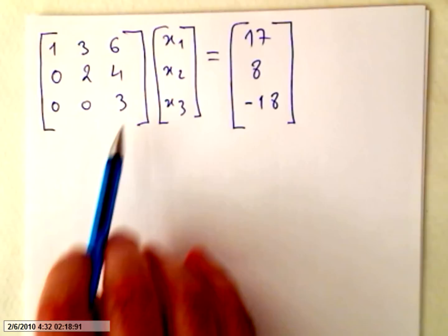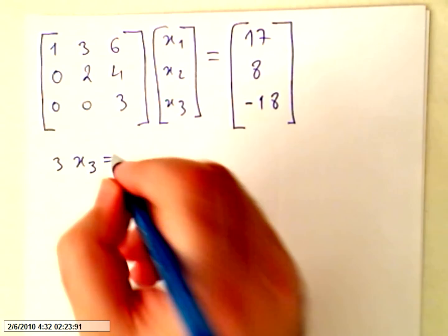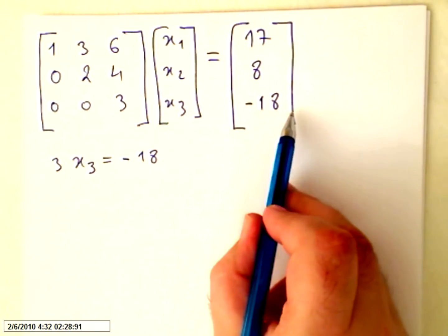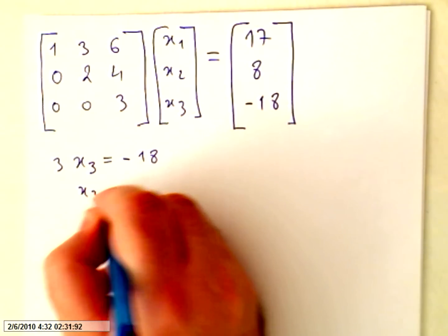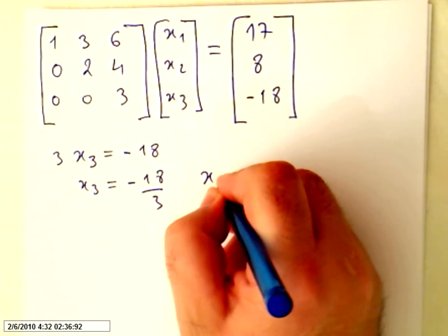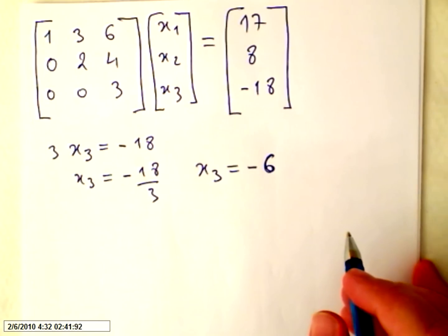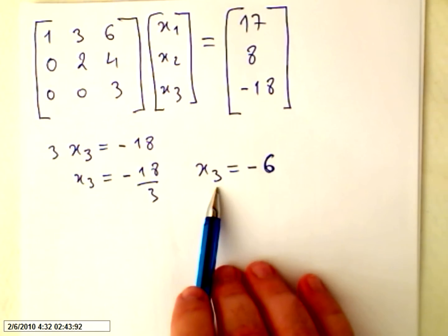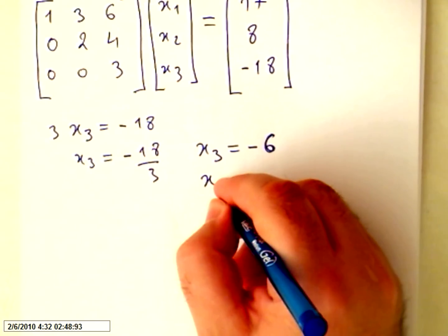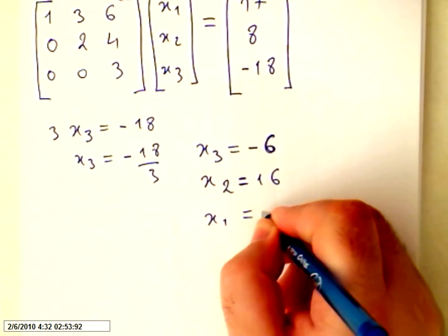Really easy. For instance, you can start here: 3 times X3 equals minus 18, so X3 equals minus 18 over 3, so X3 will be minus 6. If you keep on, you will find that X3 equals minus 6, X2 equals 16, and X1 equals 5.